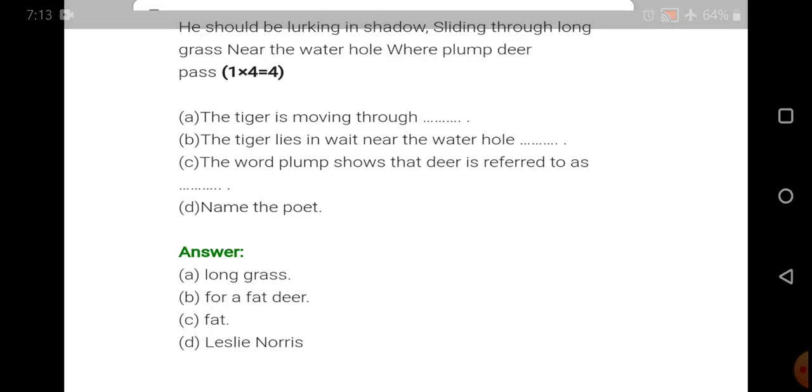Similarly, we can have this extract. He should be lurking in shadow, sliding through long grass near the water hole where plump deer pass. The tiger is moving through, so you have the answer, long grass. The tiger lies in wait near the water hole. What for? For a fat deer. The word plump shows the deer is referred to as plump. Plump means fat.